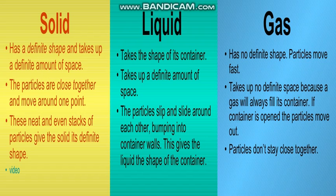Now moving on to the third state, which is gas. Like the previous two states, gas is also made up of atoms, but the arrangement is different. In gas particles there are many spaces — there is a lot of space between them, they are not tightly packed, and they can move freely from one place to another. Gas covers all the space you give it. When you open a bottle of perfume, you can smell the fragrance throughout the whole room.